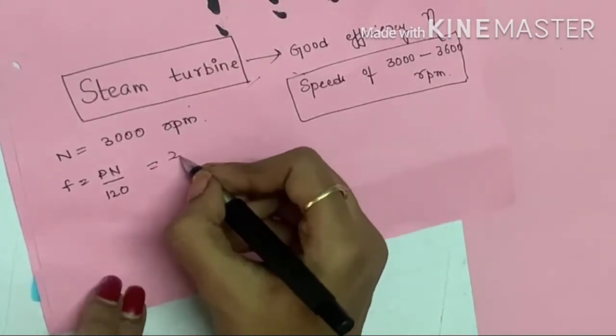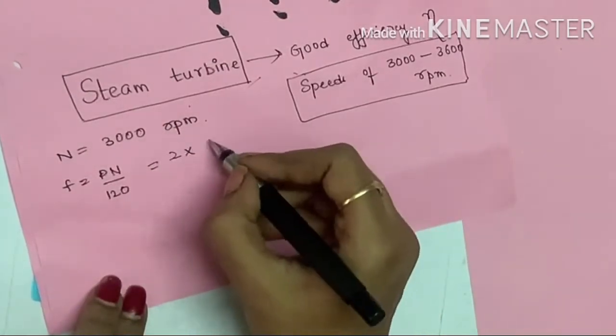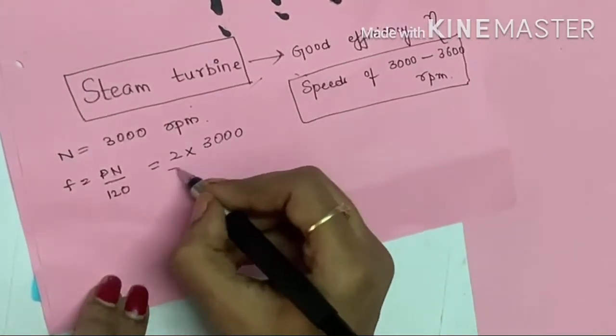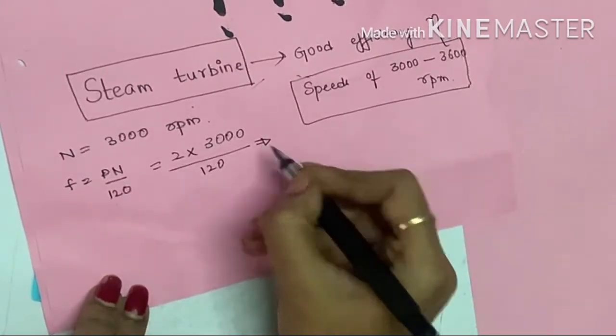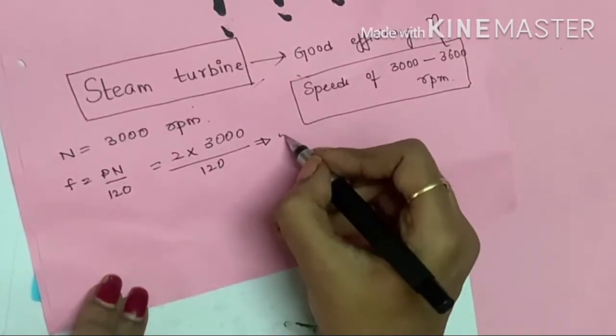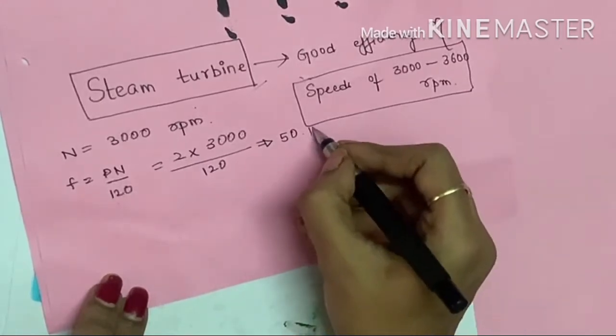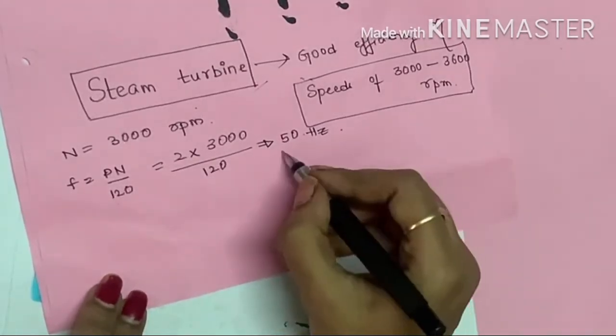I'll be having 2 poles, and if I consider N as 3000, then I will be having 50 Hertz.